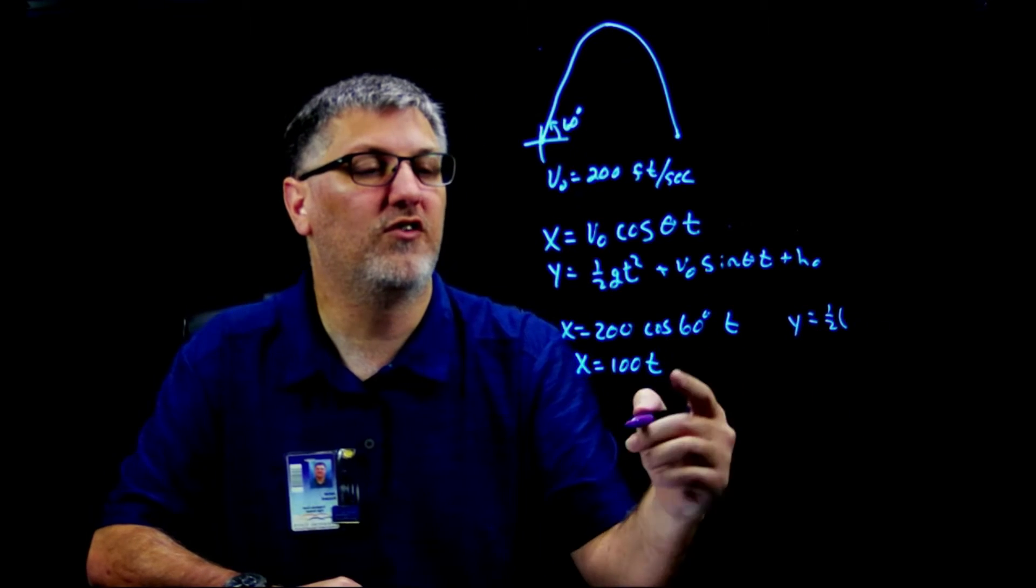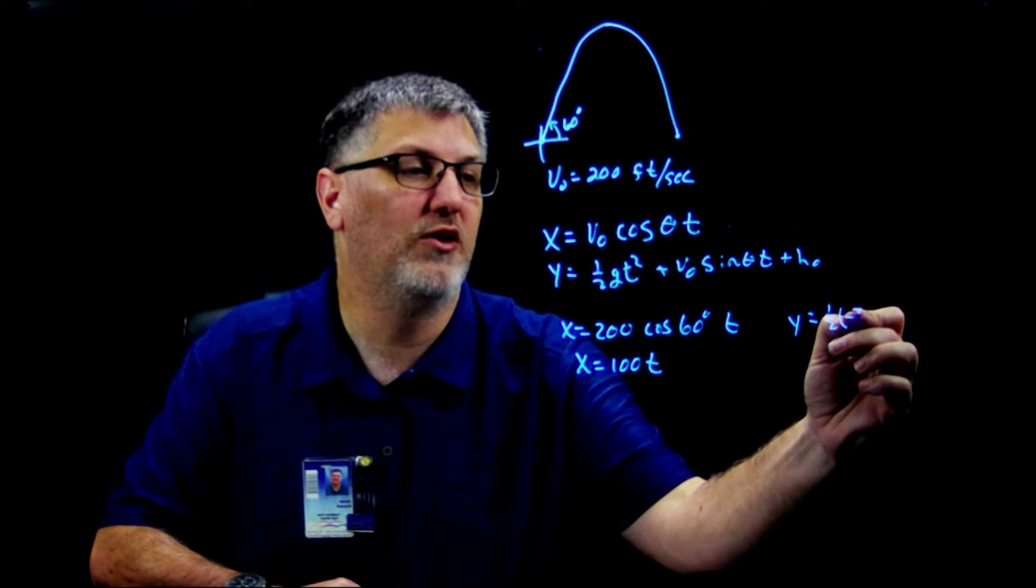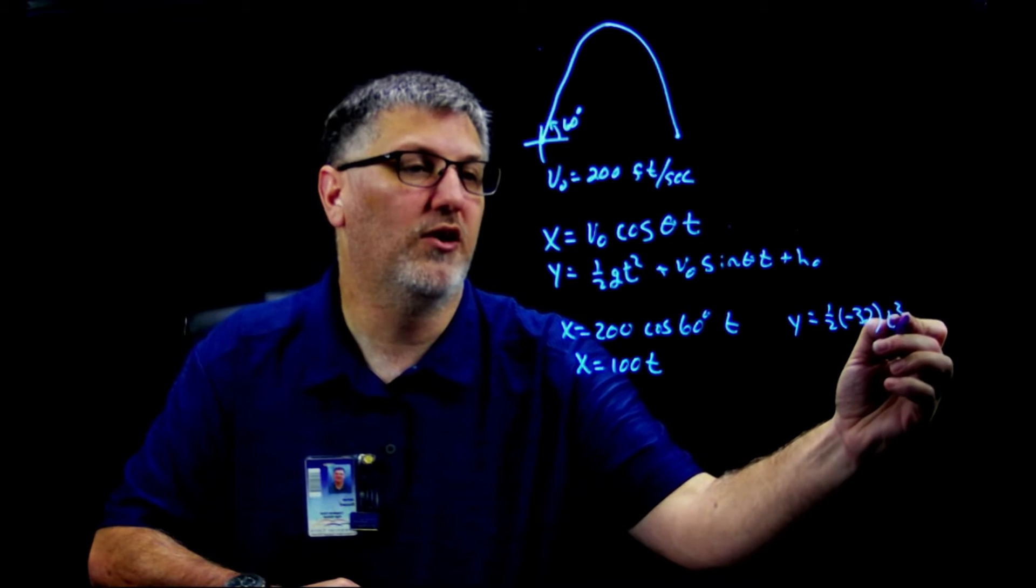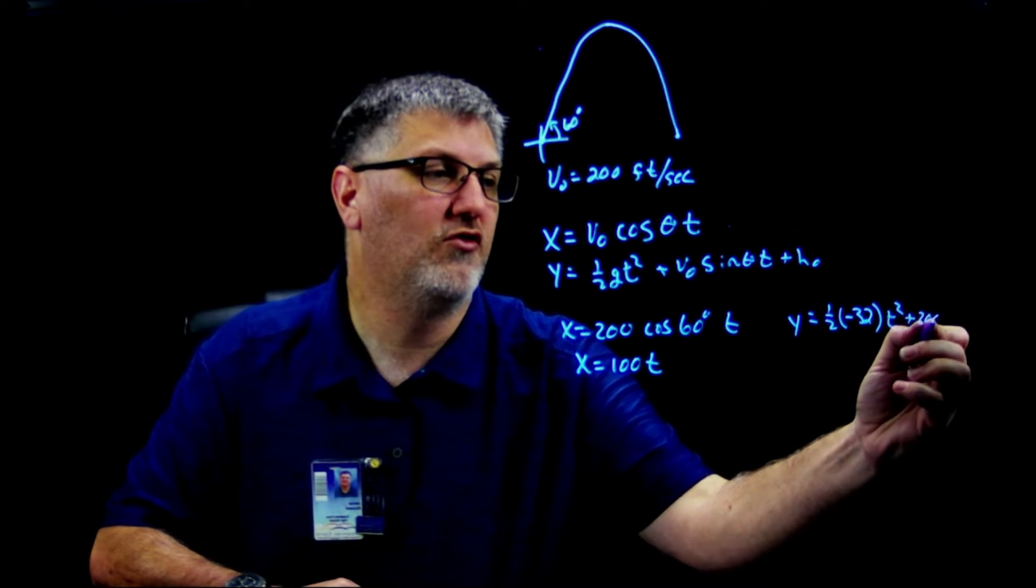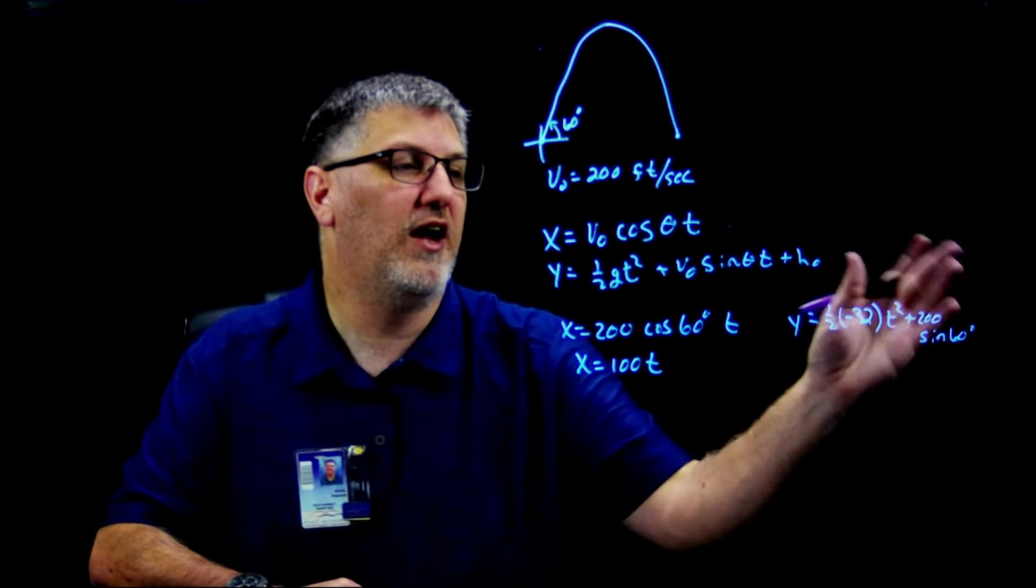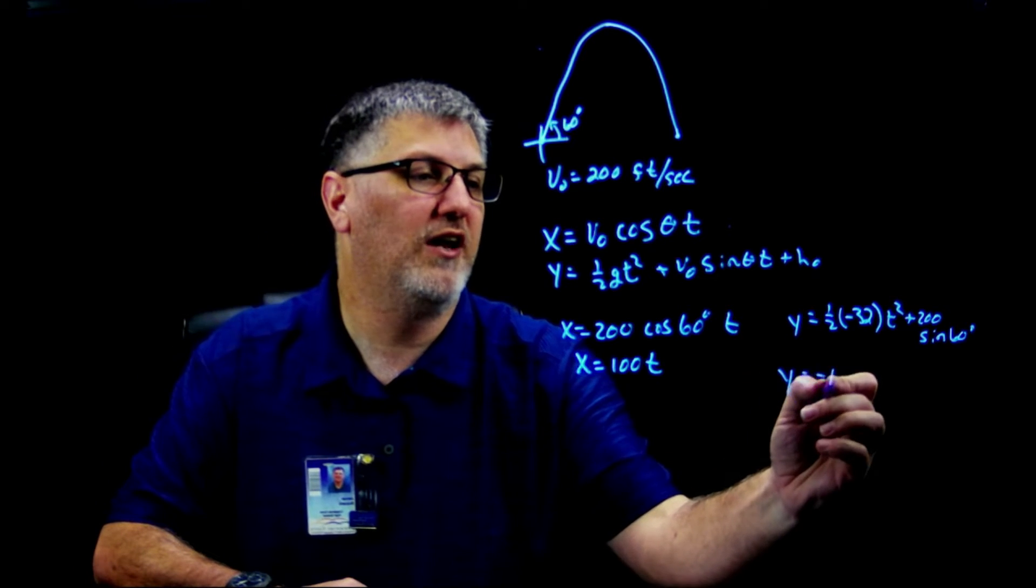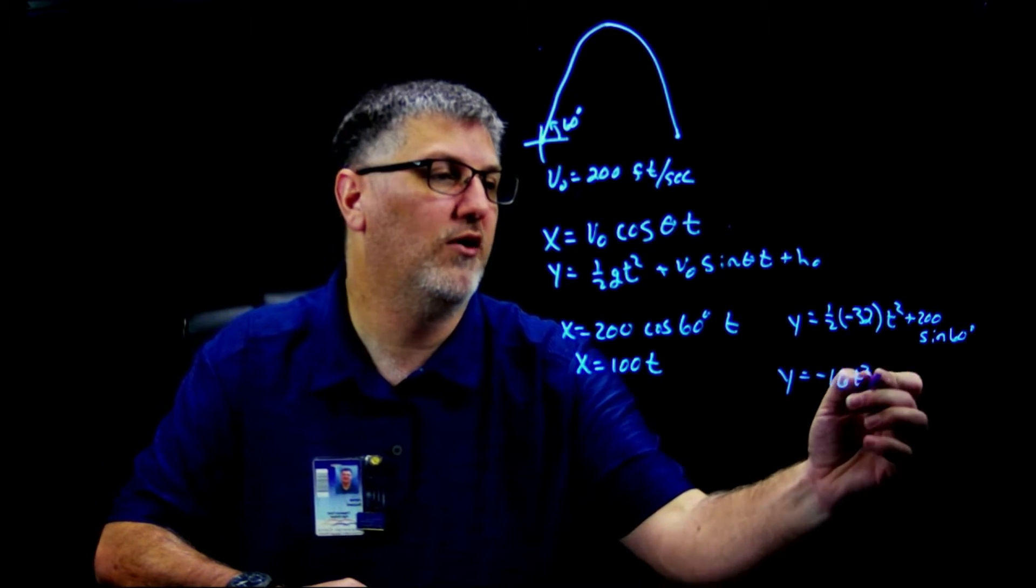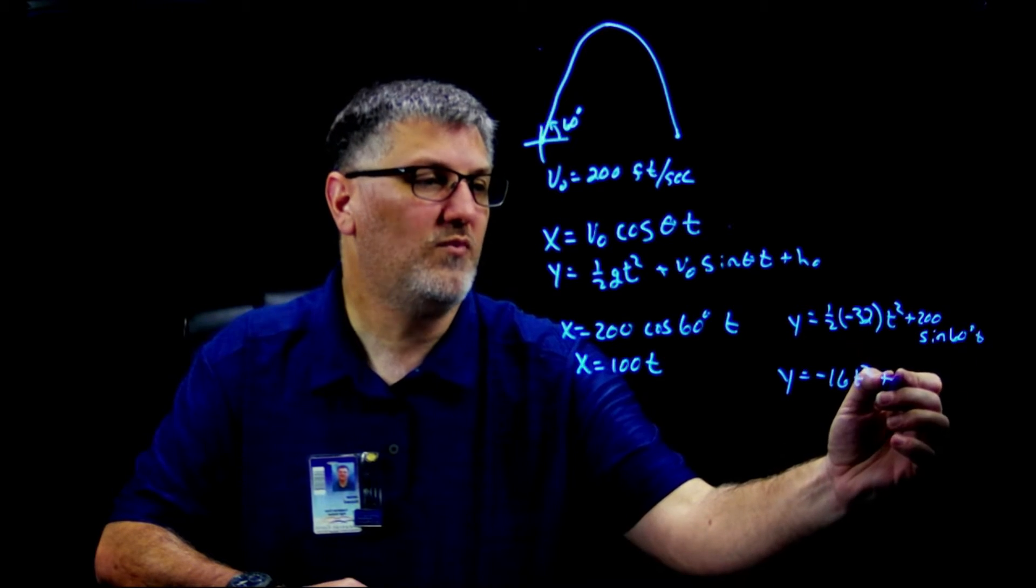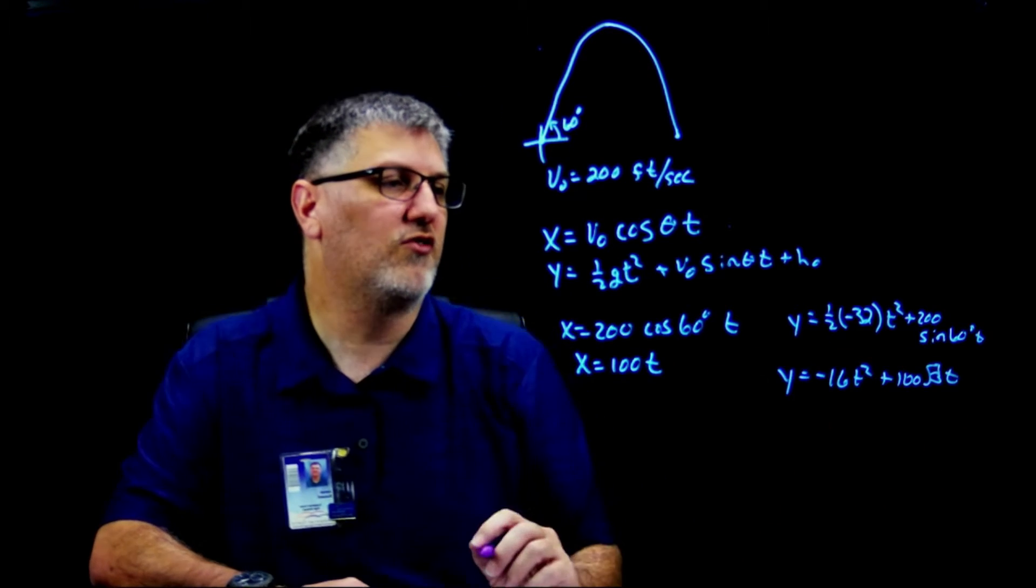For my y equation, I'm going to do one half times, well this is in feet per second so I need gravity in feet per second squared which is -32, times t² plus my initial velocity which is 200 sine of 60 degrees, and I have no h₀ because it's starting at the same level. So my y equation ends up being -16t² + 100√3 t. Just use your unit circle and multiply.